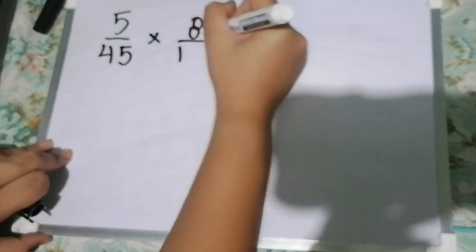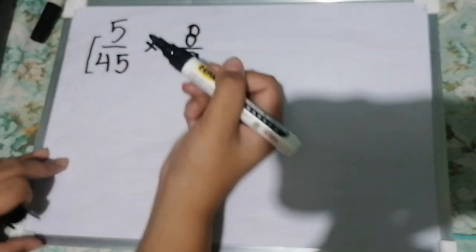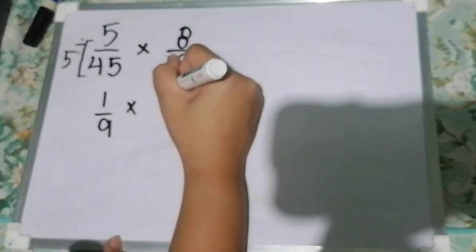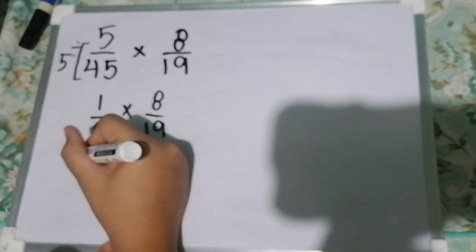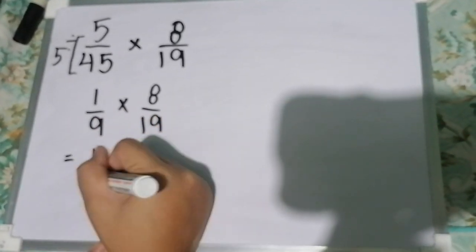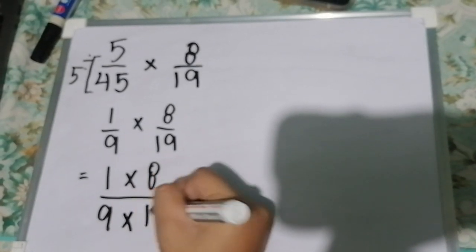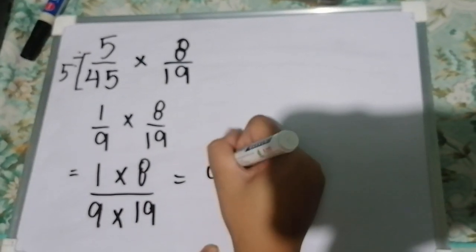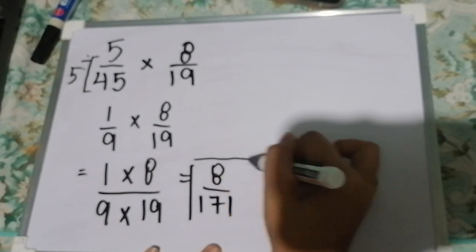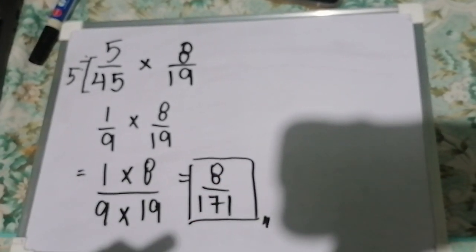Next, what is 5/45 multiplied by 88/19? So, the common factor of 5 and 45 is 5. 5 divided by 5 equals 1, and 45 divided by 5 equals 9. Then bring down 8/19. Let's proceed in multiplying numerator to numerator and denominator to denominator. 1 times 8 over 9 times 19. 1 times 8 equals 8, and 9 times 19 equals 171. So our final answer is 8/171.